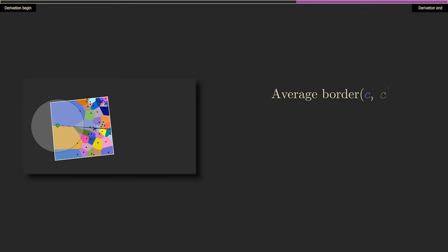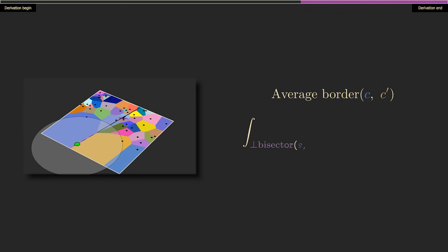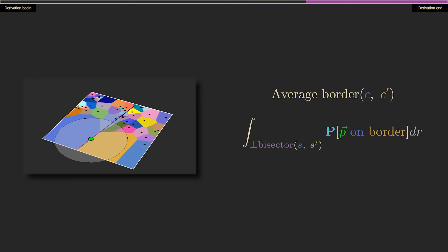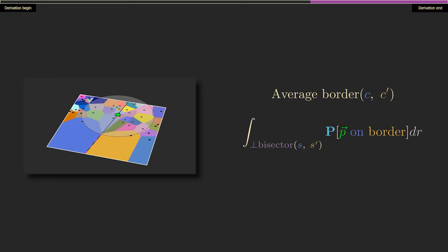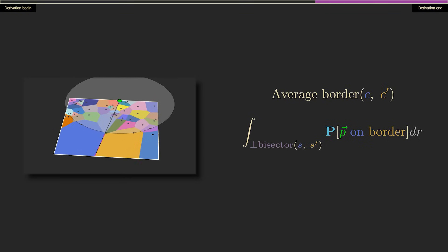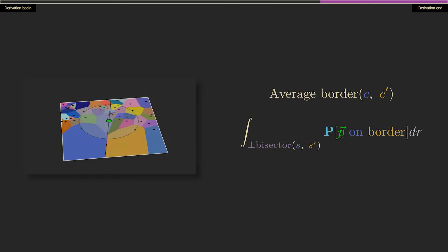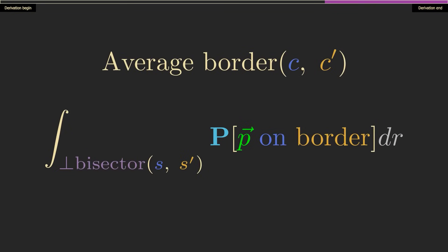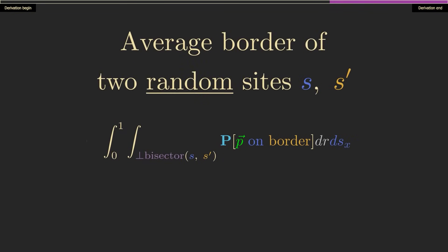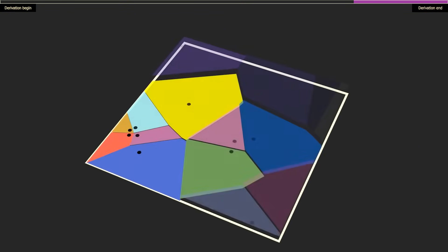Doing a line integral of this probability over the perpendicular bisector gives us the average border length between cells. And since we're also viewing the blue and gold sites as randomly placed, we can add another four more integrals in front ranging from 0 to 1 to account for all possible xy coordinates of each site.